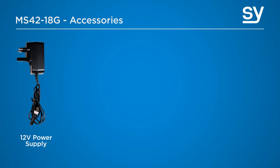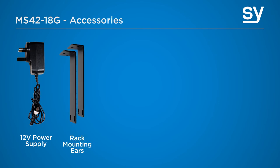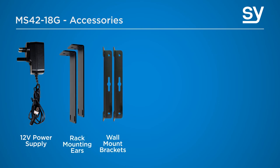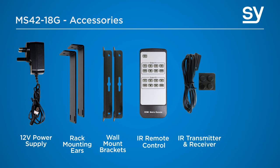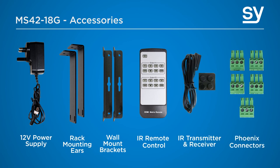So what's in the box? We have the MS-4218G, a 12 volt power adapter, rack mounting ears, wall mounting brackets, an IR remote control, IR receiver and emitters, Phoenix connectors and of course the user manual.